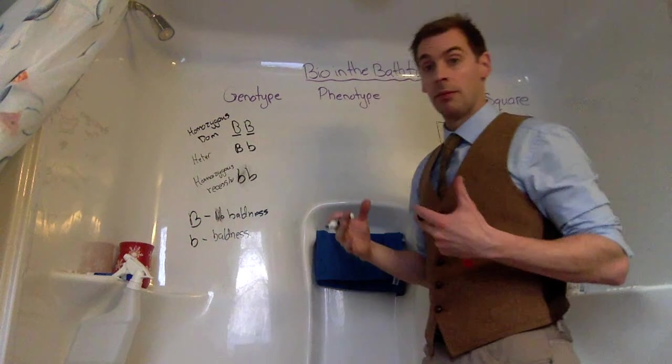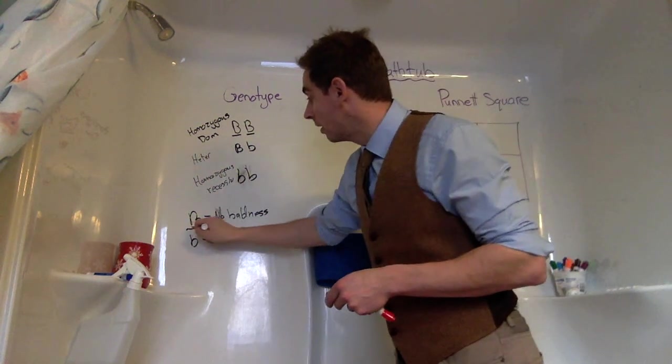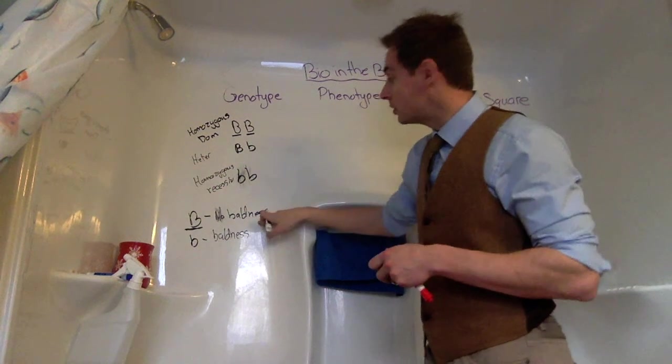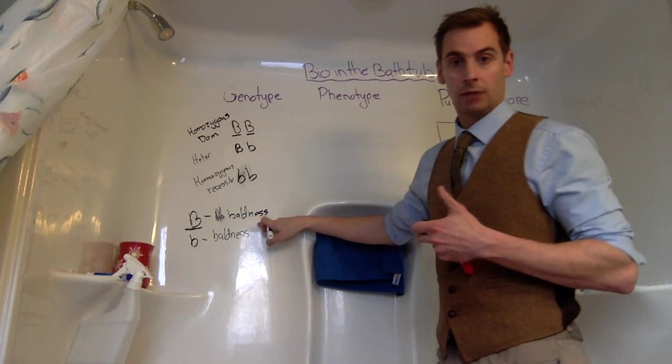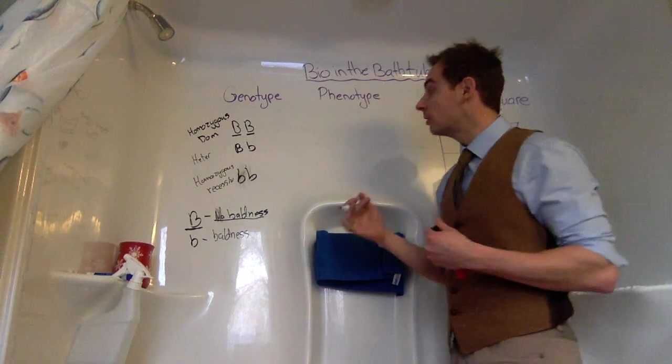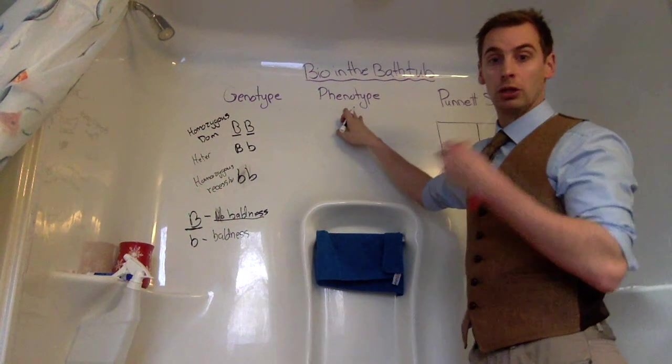So what complete dominance is, is anytime this dominant trait is present in the genotype, this trait takes over. And that's what we represent as a phenotype. A phenotype is our physical look. What does it look like?